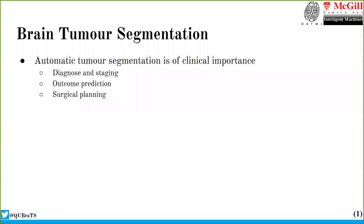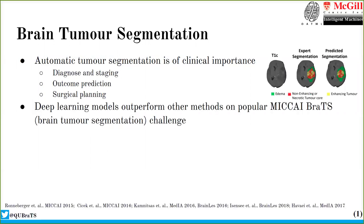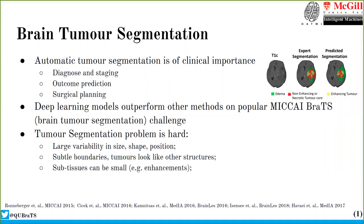Automatic brain tumor segmentation is of clinical importance as it can be used for various tasks like diagnosis and staging of tumor, outcome prediction, surgical planning, etc. Deep learning models have been outperforming other methods on brain tumor segmentation tasks in the popular MICCAI BraTS challenge. However, tumor segmentation is a really hard problem due to variability in size, shape, or position of the tumor, and boundaries between different substructures of the tumor.